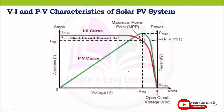Here is the model graph — VI and PV characteristics of the solar PV system. Initially, readings start from the open circuit voltage, which is the maximum resistance position. Gradually the resistance is reduced, and the current starts increasing until it reaches the short circuit current point. This is how we take the readings, and you can mark the short circuit current position.